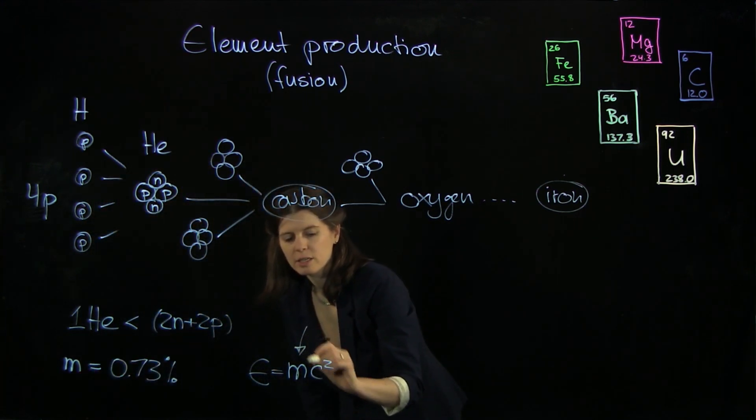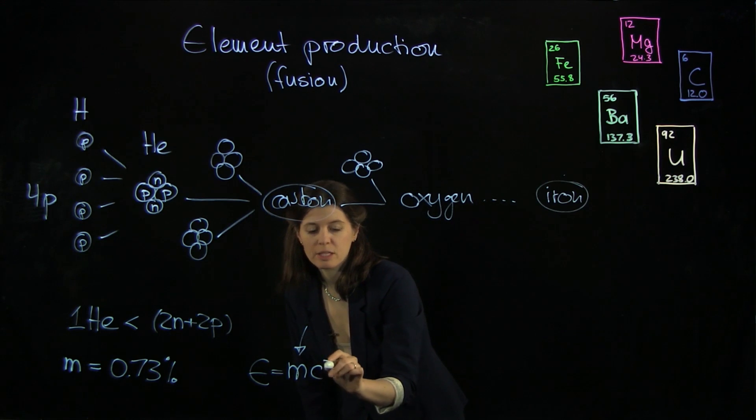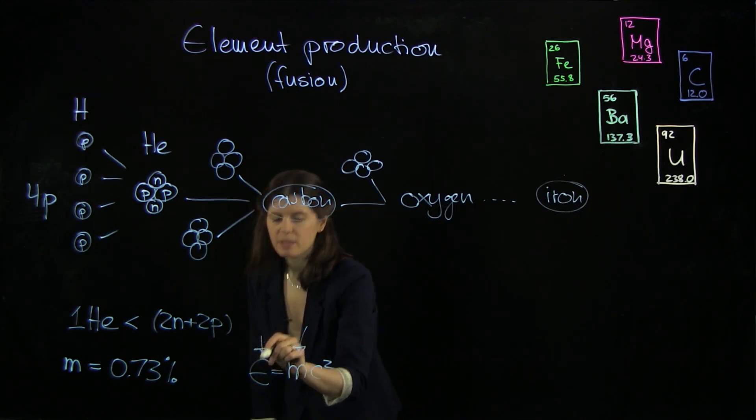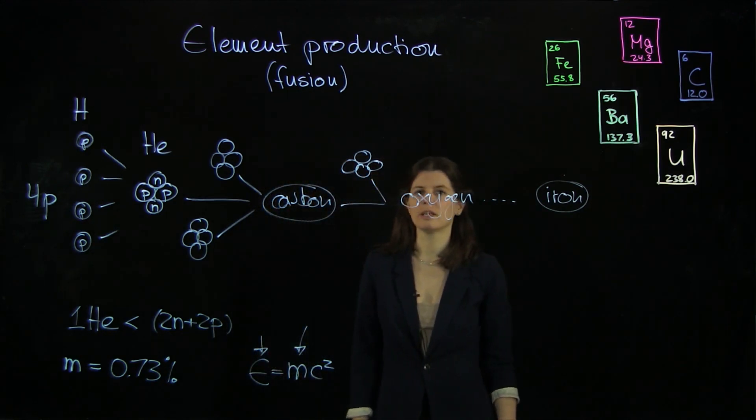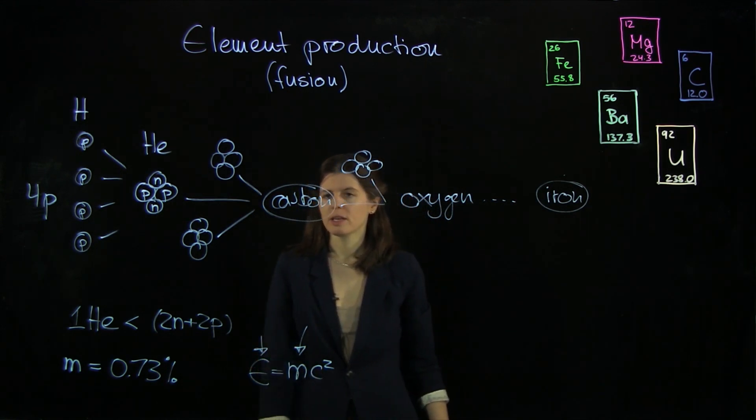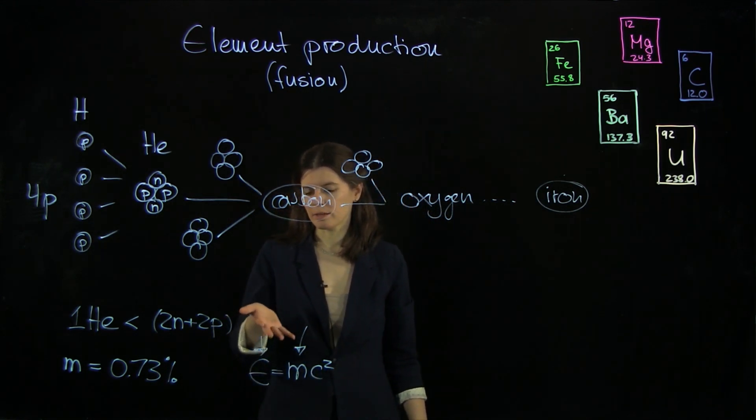And if you stick that in here, you multiply it with the speed of light c squared, which is just a constant, so just a number, and you're going to get out energy. And that is the energy that the sun is using to shine every day. So this is the nuclear energy that stars produce.